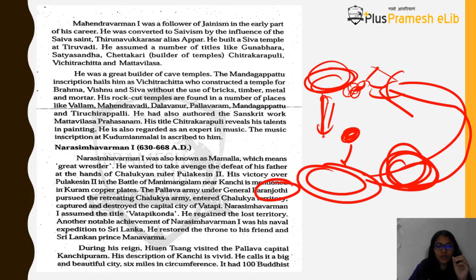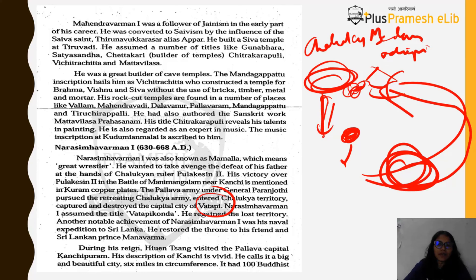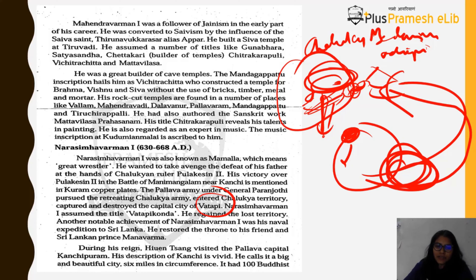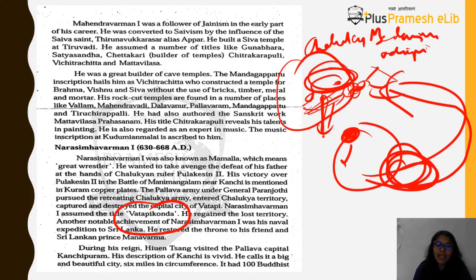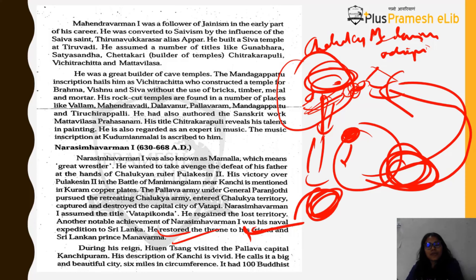The Pallava army under general Paranjoti pursued the retreating Chalukyan army, entered Chalukyan territory, and destroyed their capital city of Vatapi — hence Narasimha Varman I assumed the title Vatapikonda, meaning 'one who destroyed Vatapi.' He regained the territory his father had lost to the Chalukyas. Another important achievement of Narasimha Varman was that he sent a naval expedition to Sri Lanka and restored the throne of his friend, the Sri Lankan prince Manavarma.